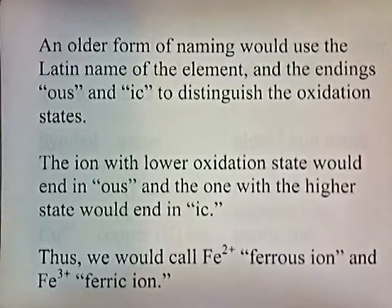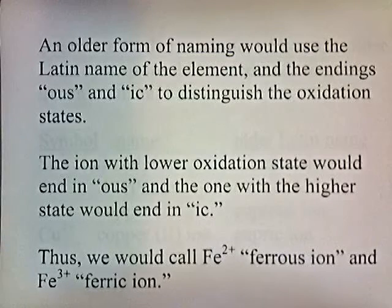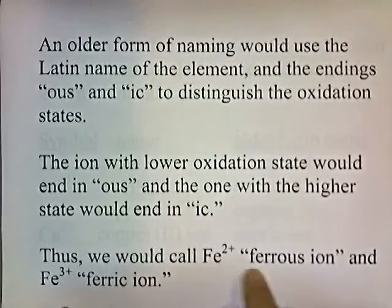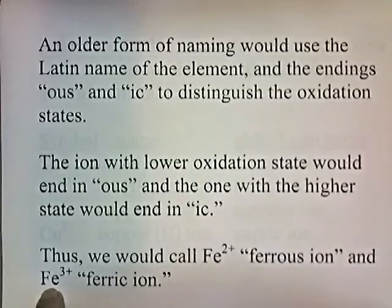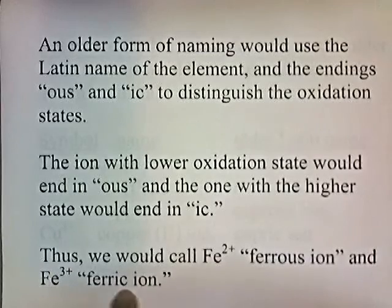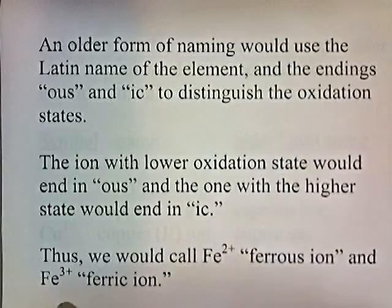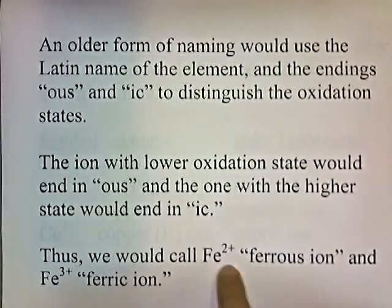An older form of naming uses the Latin name of the element and the endings -us and -ic to distinguish the oxidation states. The ion with the lower oxidation state ends in -us and the one with the higher oxidation state ends in -ic. Thus, Fe2+ is called ferrous ion and Fe3+ is called ferric ion, since plus three is a higher oxidation state than plus two.